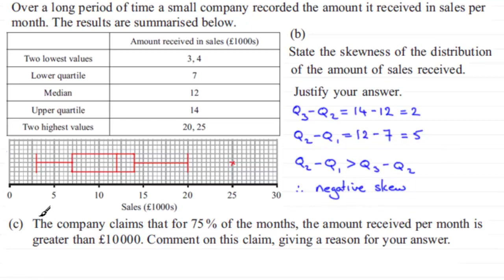In part C, the company claims that 75% of the months have the amount received per month greater than £10,000. We need to comment on this claim with a reason. Well, £10,000 is here on the plot, and the lower quartile is at £7,000. We can see that 75% of sales are greater than £7,000, so the claim is clearly not going to be true.